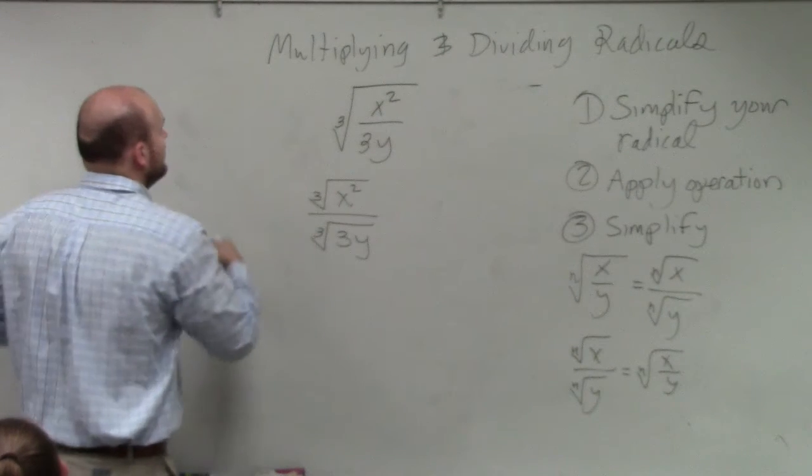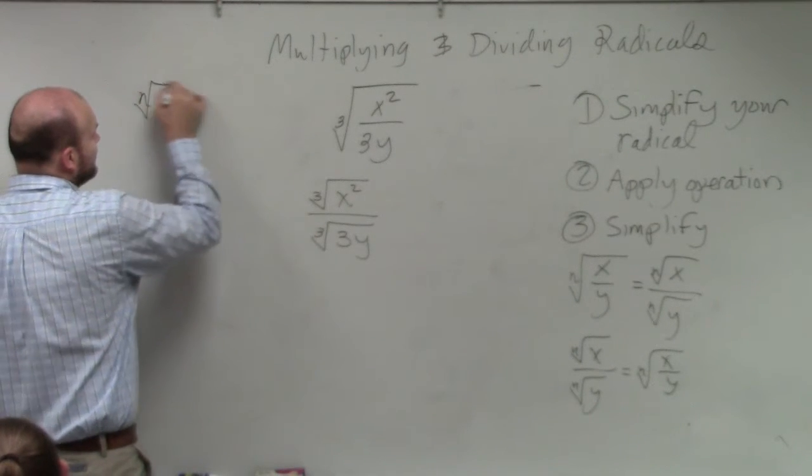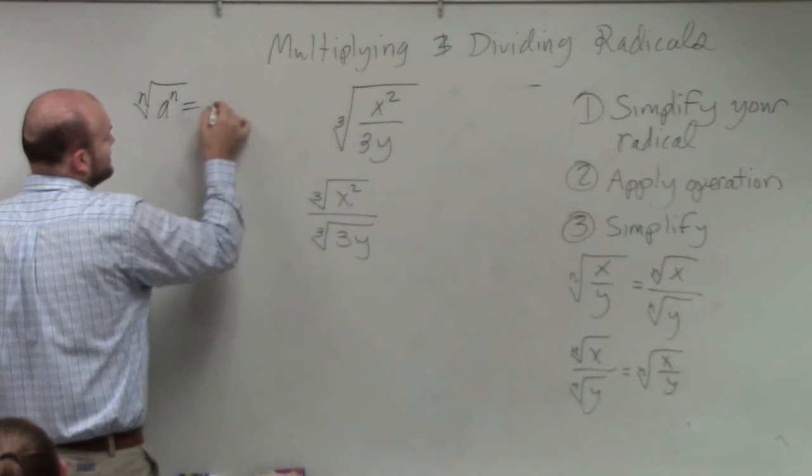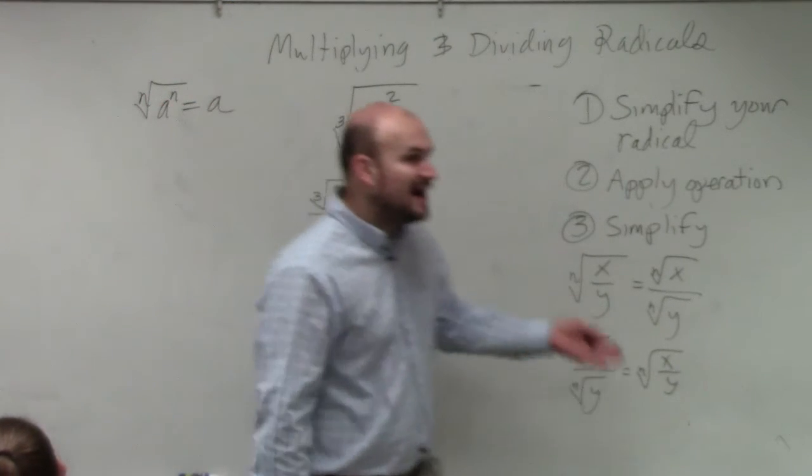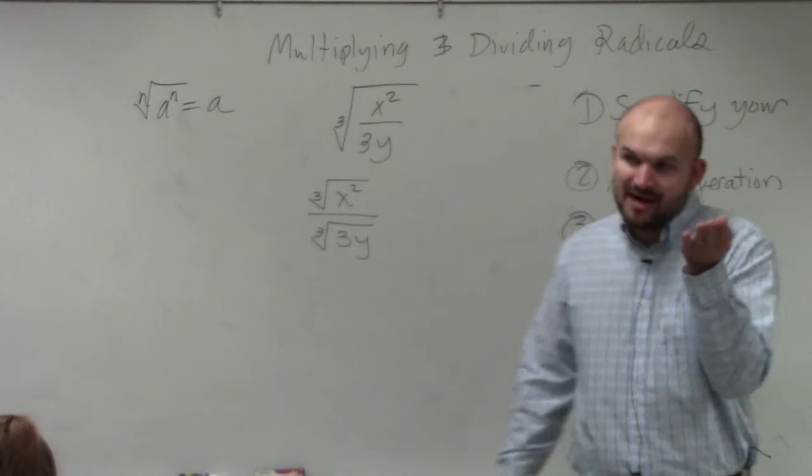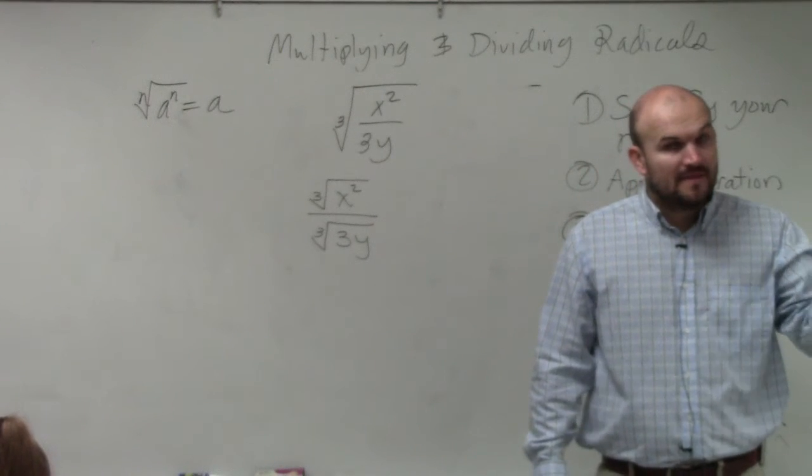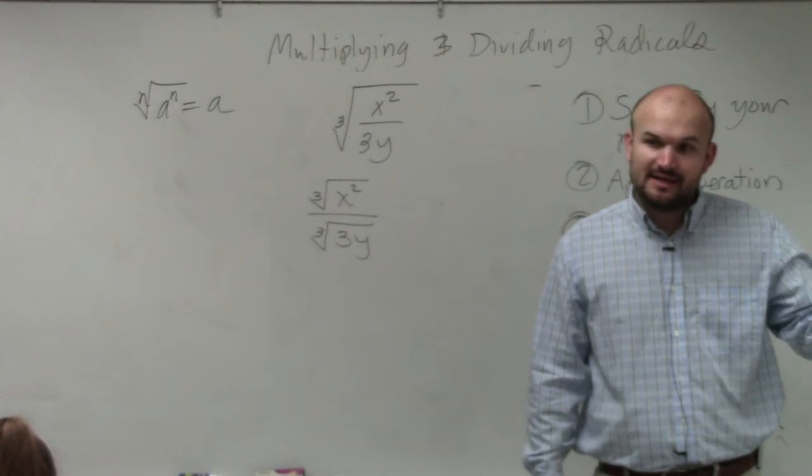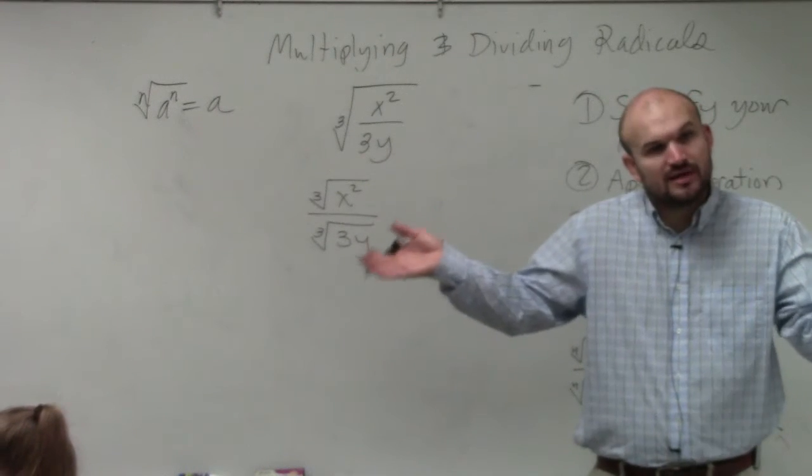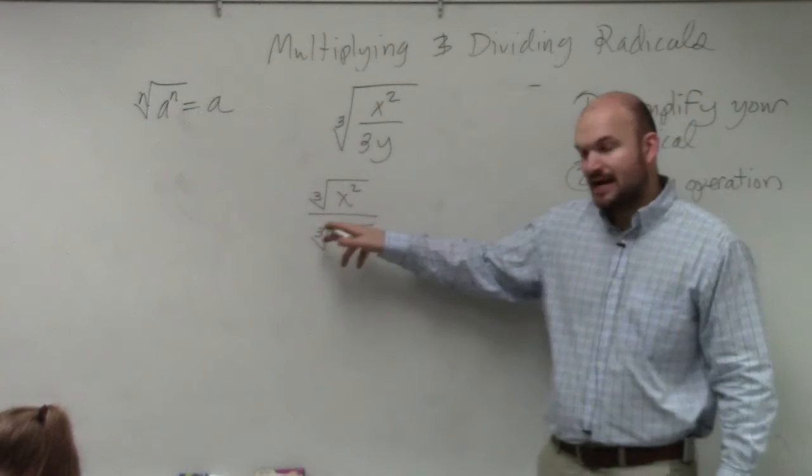So therefore, I'm going to have to simplify. And the idea, again, goes back to this identity element. If I can find, if I can get my radicand to be raised to the same power as my index, then I can apply the identity element, right? I can say it's equal just to that radicand.